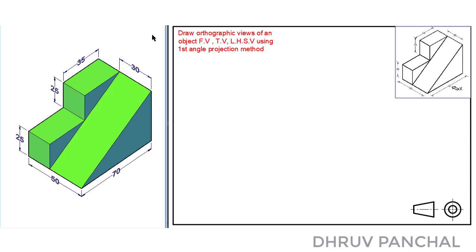Hello friends, in engineering drawing subject we are going to learn orthographic projections, in which today we will learn how to draw orthographic views of a given 3D object using first angle projection method. So here is our data for the problem: draw orthographic views of an object — front view, top view, and left hand side view using first angle projection method.